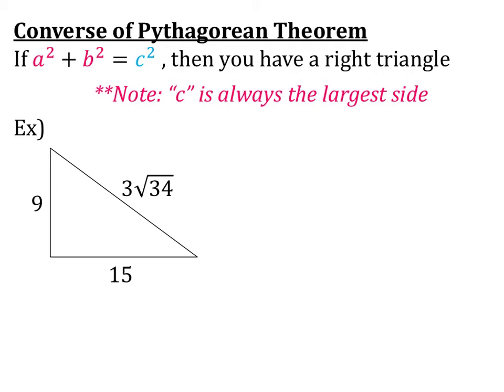Now let's talk about the converse of the Pythagorean theorem. This says that if A squared plus B squared equals C squared, then you have a right triangle. So this just states that if your sides satisfy this equation, A squared plus B squared equals C squared, then it's a right triangle.